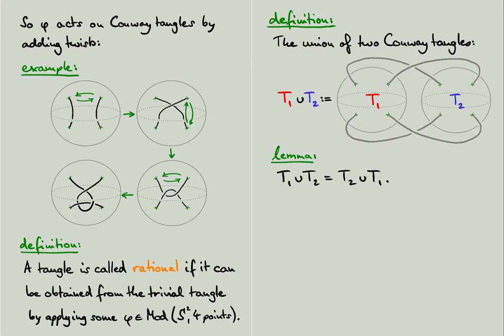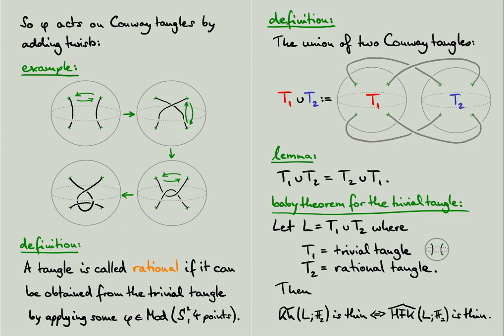The map that we will fix for the identification of the two Conway spheres is this one here. We will glue the back of the tangle T1 to the front of the tangle T2, and we call the resulting link the union of T1 and T2. With this notation in place, we can now state the baby theorem for trivial tangles. Let L be the union of a trivial tangle and a rational tangle. Then we claim that the Khovanov homology of L is thin if and only if its knot-Floer homology is thin.